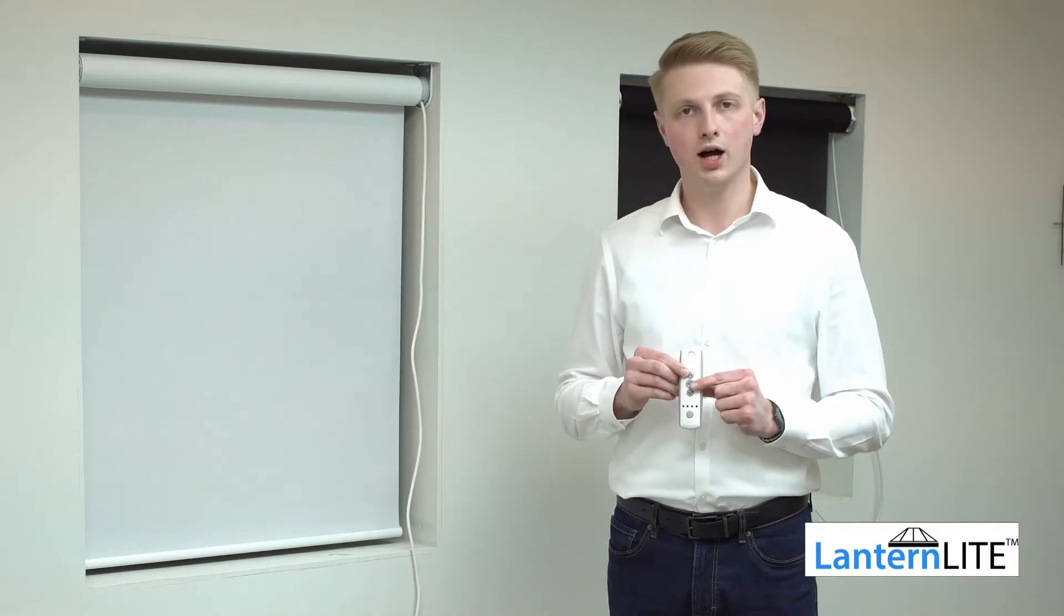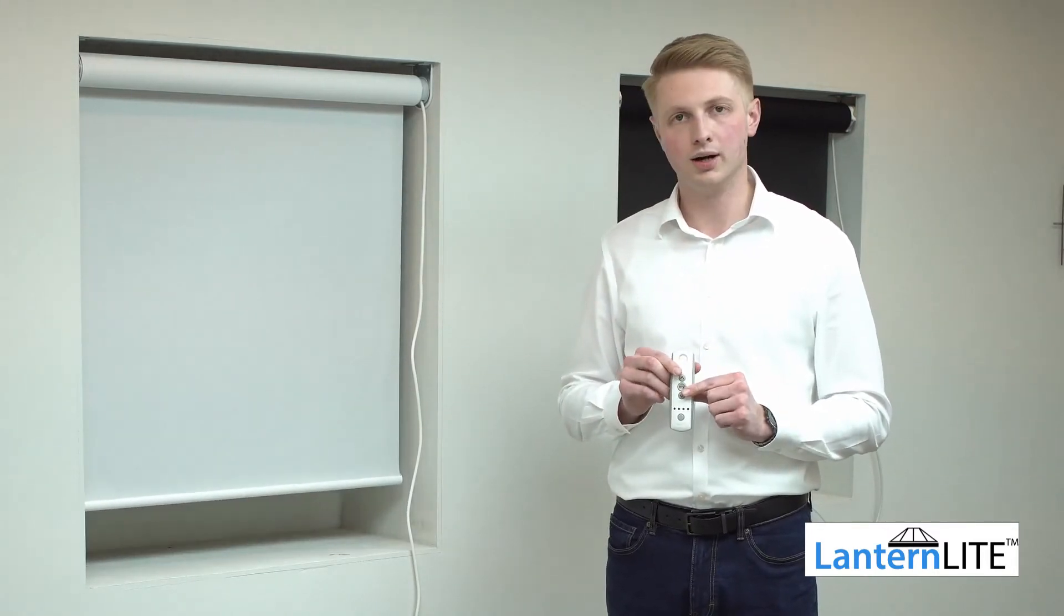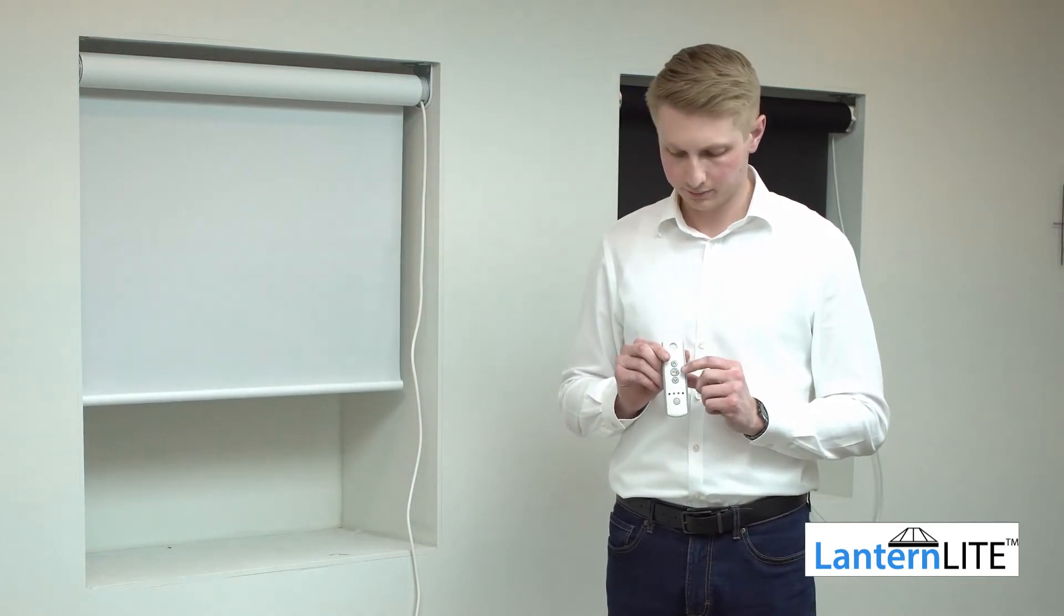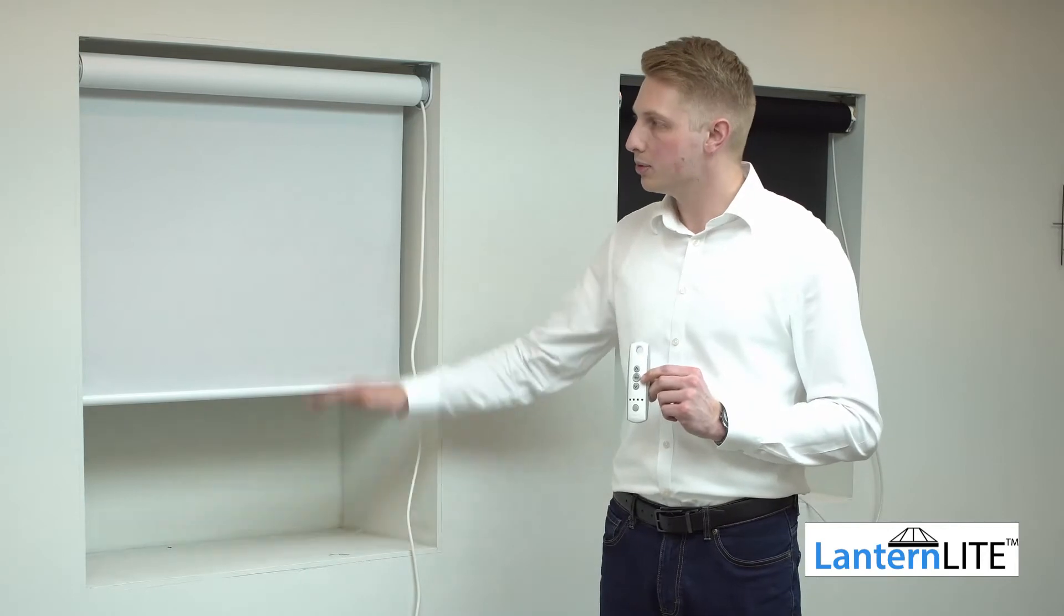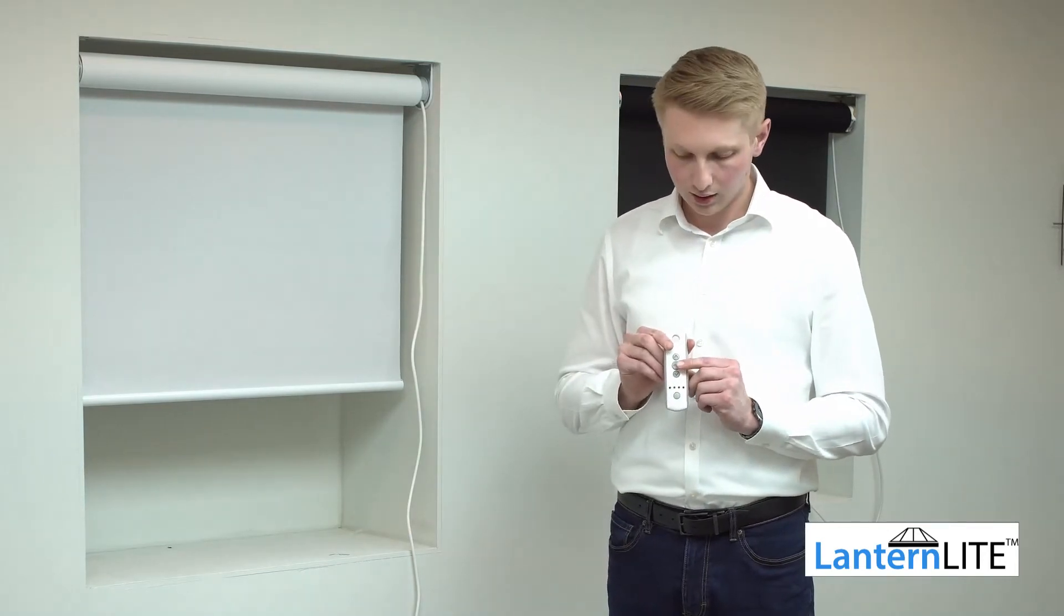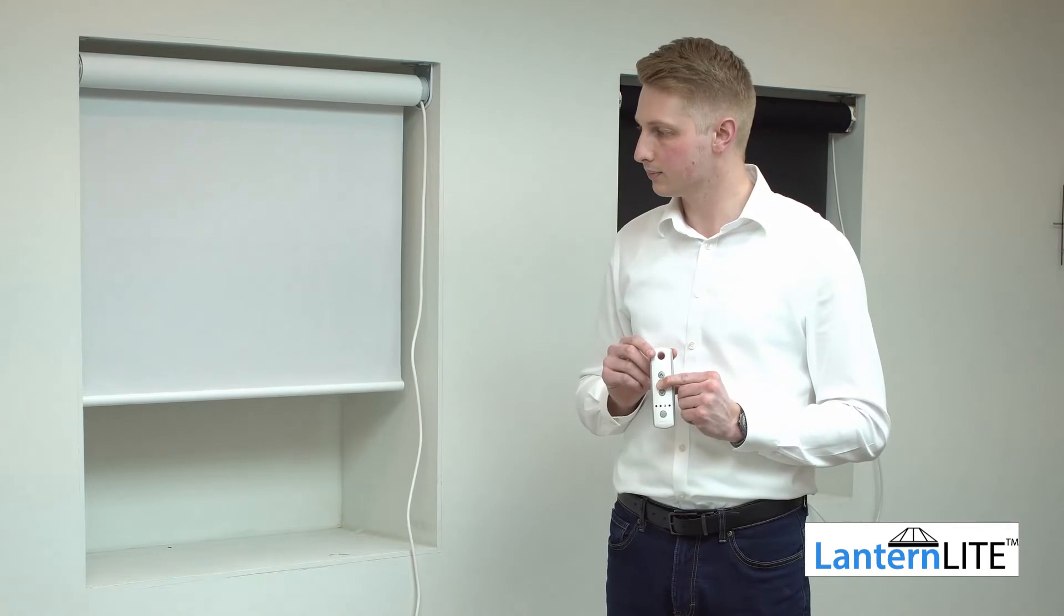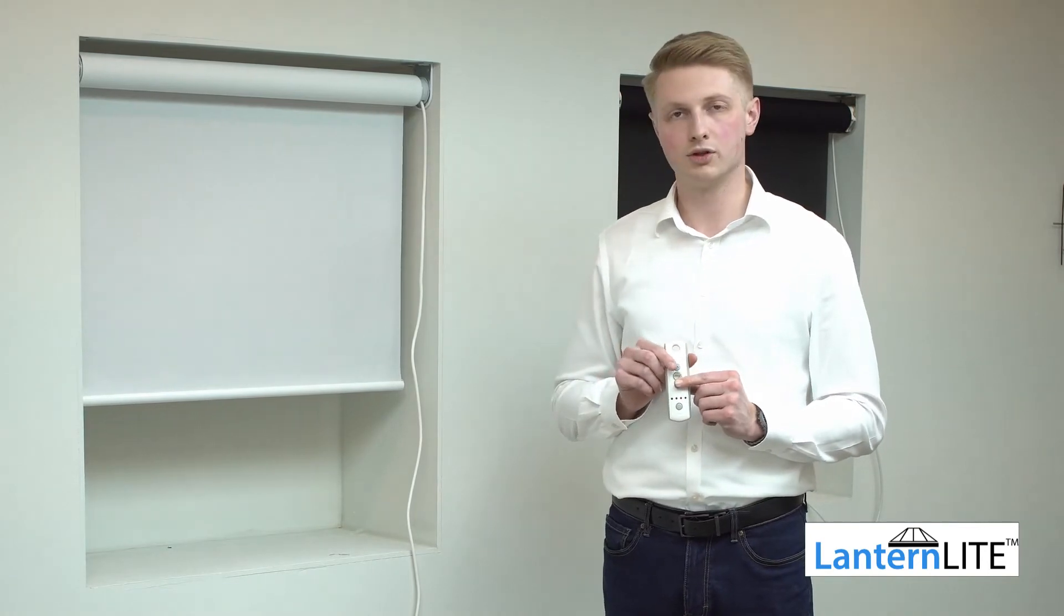I'm now going to press the up and the my buttons together and the blind is going to travel by itself. To stop it, press the my button once. If you're happy with those limit positions, press and hold the my button until it shunts. That confirms that those limit positions are now being set.